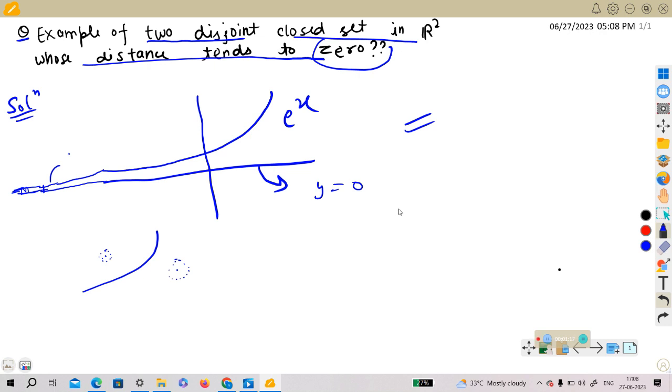This is an example of two disjoint closed sets in R² whose distance tends to zero.